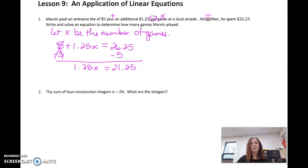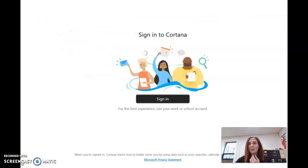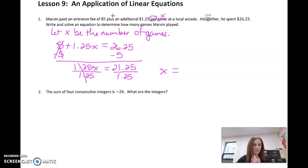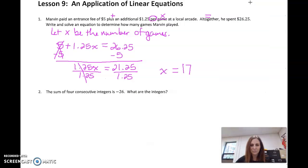All right, so now we solve for x. This is $1.25 or 1.25 times x. So we do the inverse, the opposite. We divide. And whatever we do to one side, we do to the other. 1.25 divided by 1.25 is 1. We're left with 1x equals, if you take a calculator and go 21.25 divided by 1.25, you get 17.